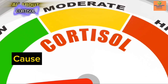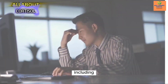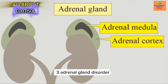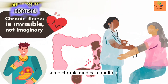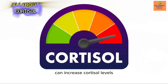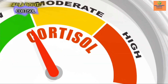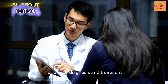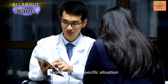Causes of high cortisol levels include stress, Cushing's syndrome, adrenal gland disorders, obesity, and chronic illness — such as diabetes, cardiovascular disease, or chronic pain. Sleep disorders and depression and anxiety can also raise cortisol levels. If you suspect high cortisol levels, consult a healthcare professional for proper diagnosis and treatment, as they can perform tests and provide guidance based on your specific situation.